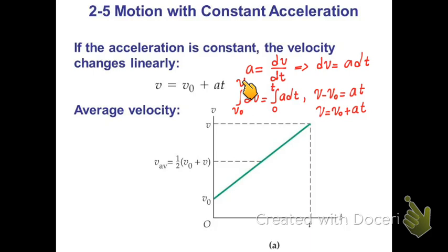For dv, the initial velocity is v0, and the final velocity v. The initial time, as we always take 0, to the final time, a dt.